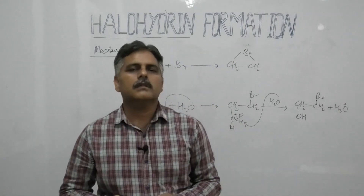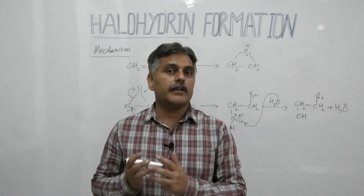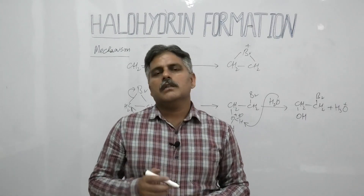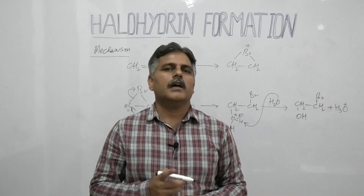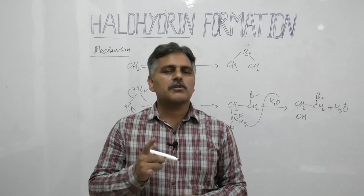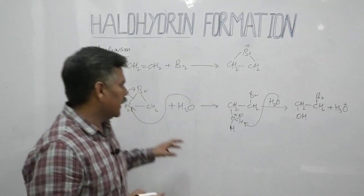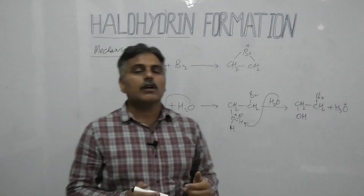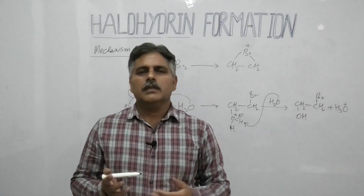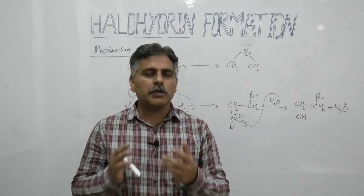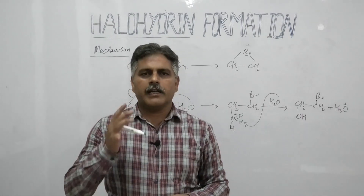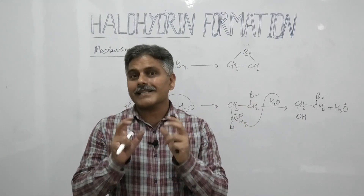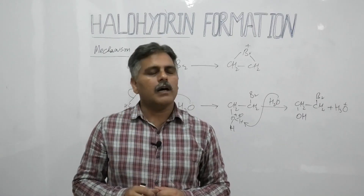So this is all about halohydrin formation. I have discussed the mechanism. In my upcoming lecture I will discuss the orientation of halohydrin formation and its stereochemistry. In all these examples I selected a symmetrical alkene. But in the case of unsymmetrical alkenes — such as propene — the attachment of OH and the halogen follows Markovnikov's rule, which will be discussed in my upcoming lecture.